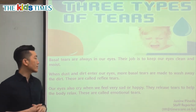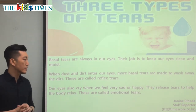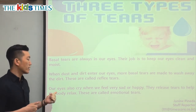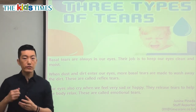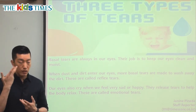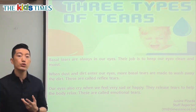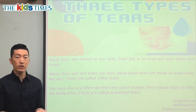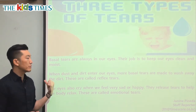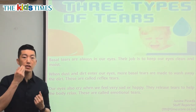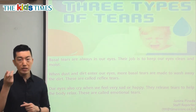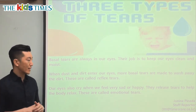When dust and dirt enter our eyes, more basal tears are made to wash away the dirt. If something gets in our eyes, our eyes make more tears so they can wash it away — kind of like how when we get our hands dirty, we go under the sink and wash them. In the same way, our body makes more tears to rinse out our eyes.